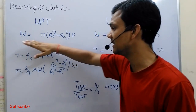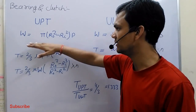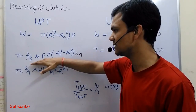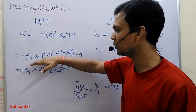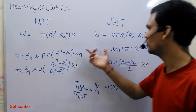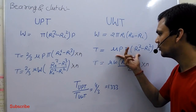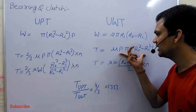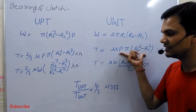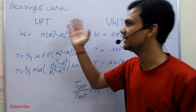If a bearing or clutch can work under more friction and torque in the worst condition, then obviously it can also work under the uniform wear theory condition where friction is less. This is the logic behind designing for worst-case conditions in both bearing and clutch.